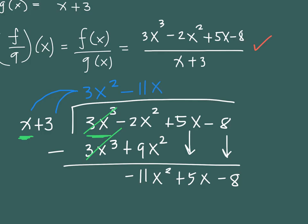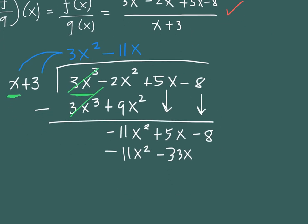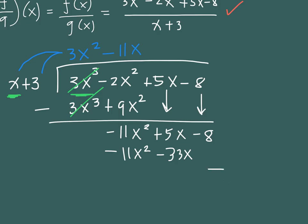Negative 11x times x gives negative 11x squared, and negative 11x times 3 gives negative 33x. We subtract: negative 11x squared cancels. 5 minus 33 gives positive 38, so we have 38x. Bring down minus 8 and repeat the process again.